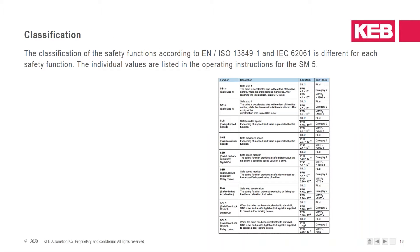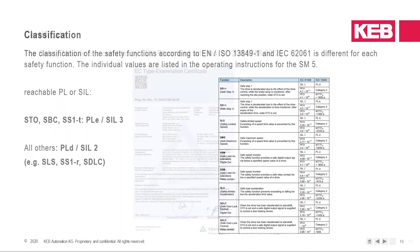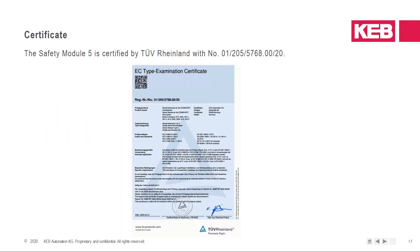Classification: we have to offer some safety values for each safety function so you can calculate your safety function in the machine. Reachable performance level: for STO, SBC (safe brake control), and SS1 time controlled, we have PL-e / SIL 3. The others have PL-d / SIL 2. We have a certification by TÜV Rheinland for the safety module.